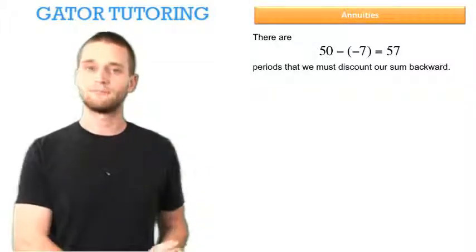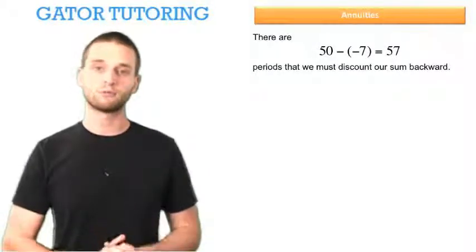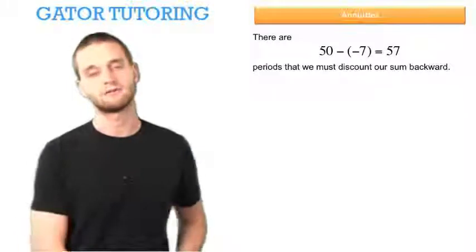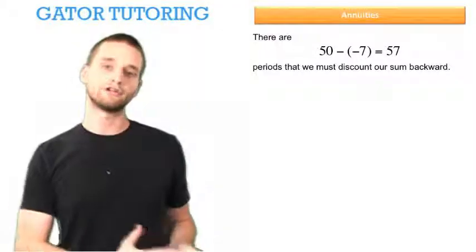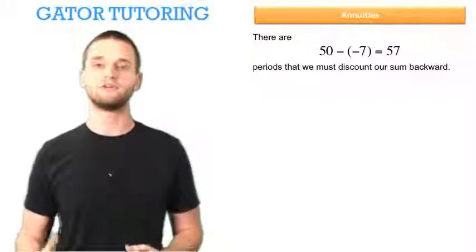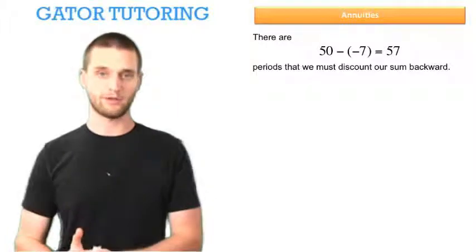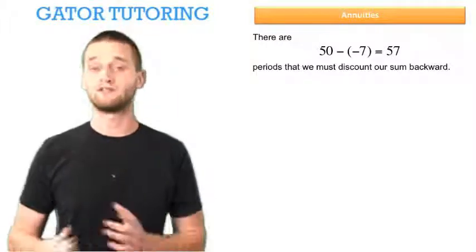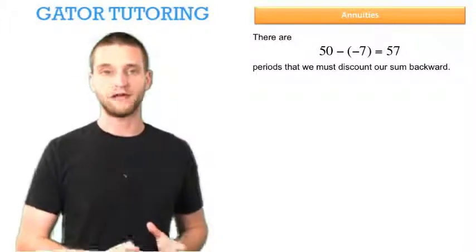So again, we're looking for what the lump sum is worth in period negative 7. And since negative 7 is earlier in time than period 50, which is where we have currently the value of the annuity, we need to discount this value backwards.